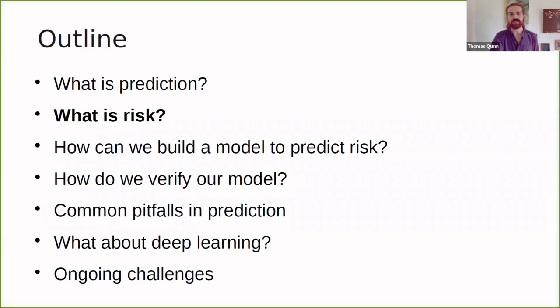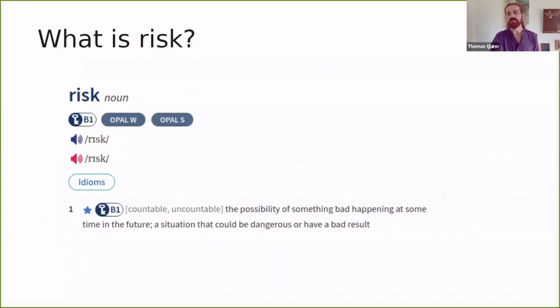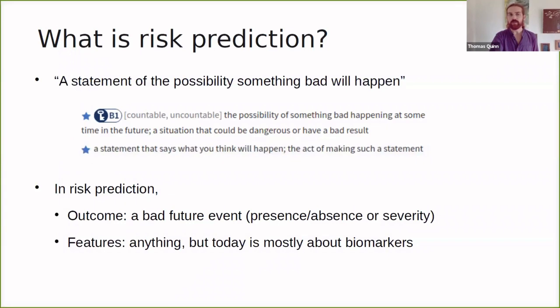So what is risk? Risk is the possibility of something bad happening in the future, a situation that could be dangerous or have a bad result. If we put this together, then risk prediction is a statement about the possibility something bad will happen. In risk prediction, we have an outcome, which is a bad future event, say disease occurring or not occurring, or the severity of the disease. And the features are anything that we want to use to make that prediction. But I'll be talking mostly about biomarkers as an example, because that's what I'm most familiar with.